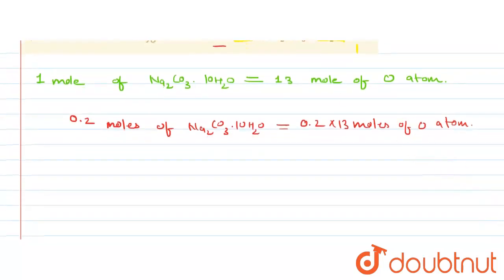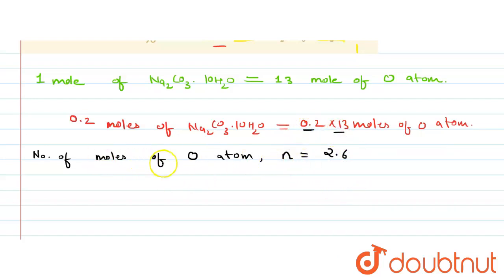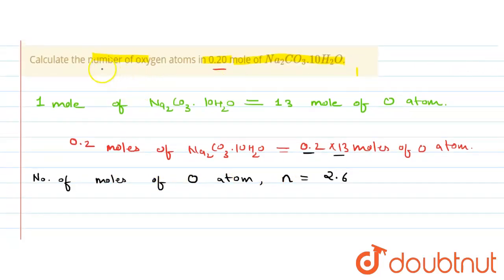Now we have the number of moles of oxygen atom. We denote it as small n, which equals 0.2 into 13 = 2.6. So our small n — the number of moles of oxygen atom — is 2.6. What we have to find is the number of oxygen atoms.